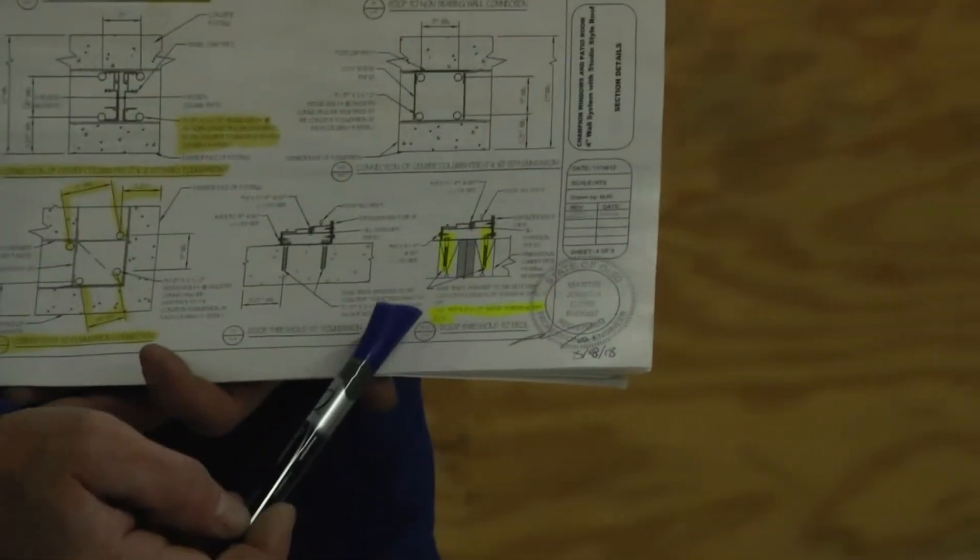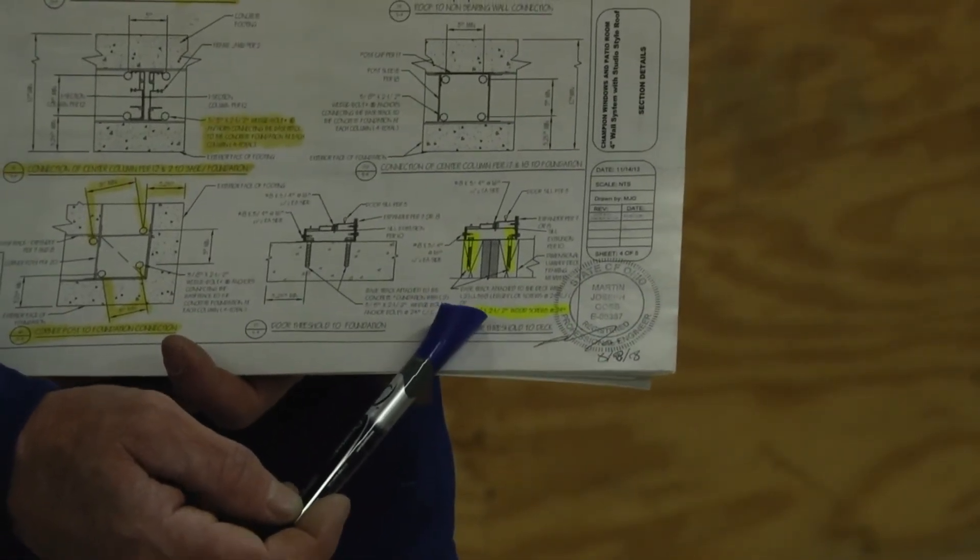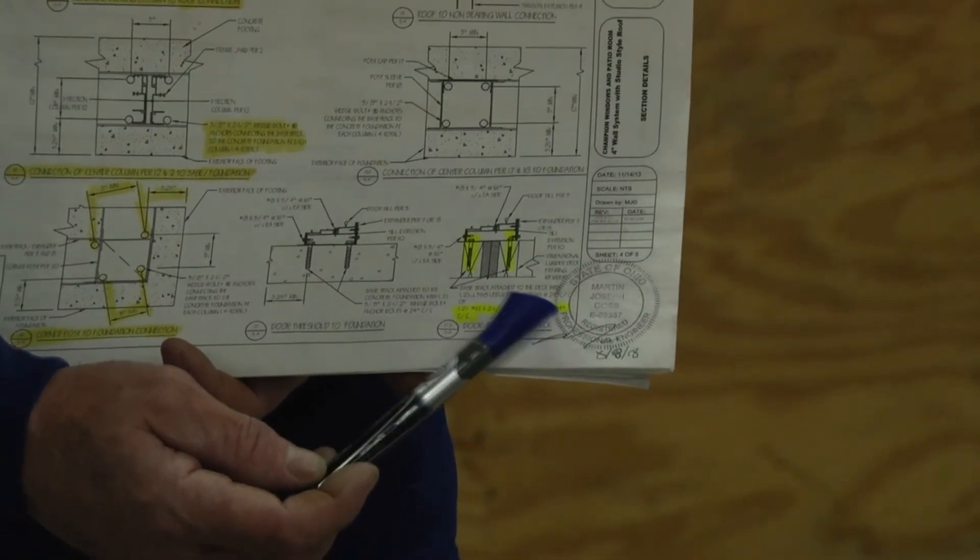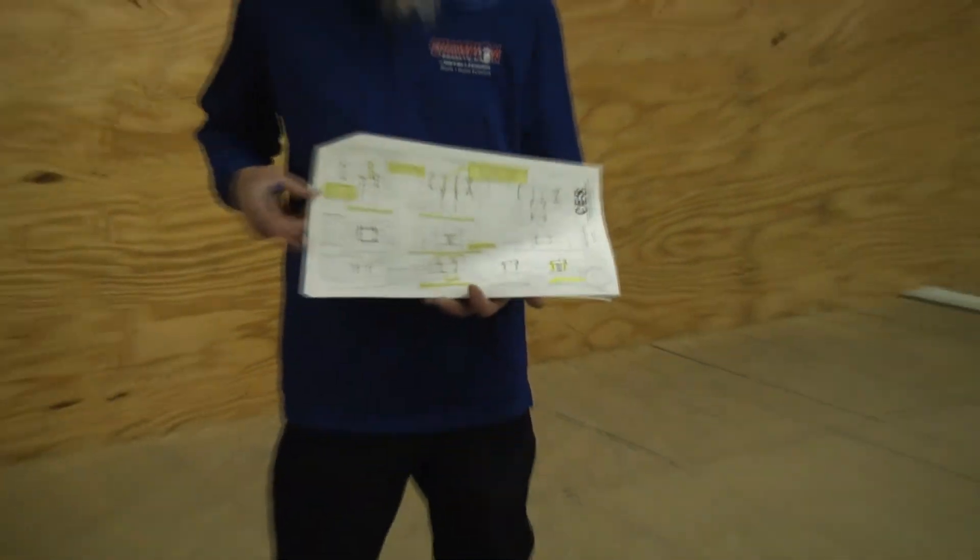And over here, it shows our fasteners in the engineering. So we're going to be using two number 12 by two and a half wood screws, spaced 24 inches apart. We're going to get that all laid out now.